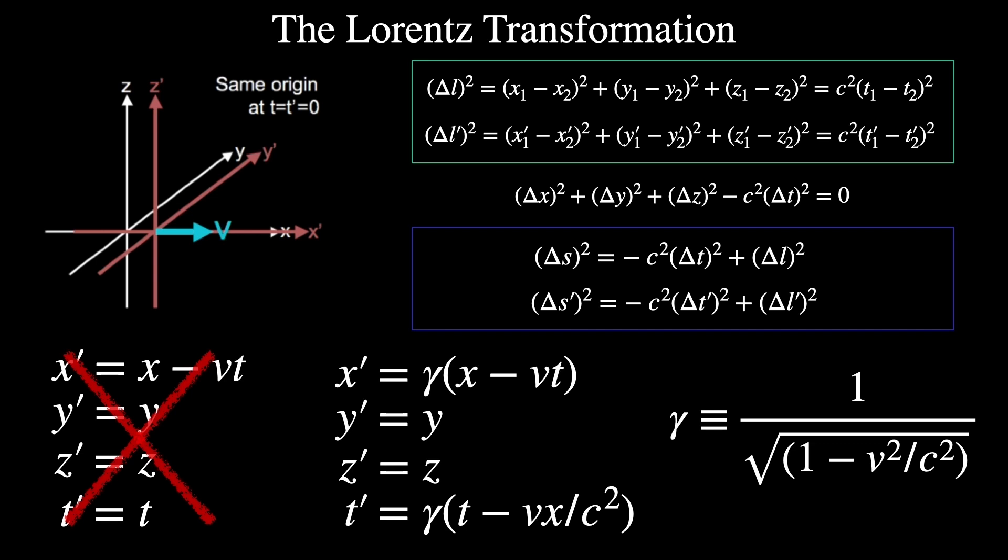But if you look at events where you're transforming between two frames at a speed that's an appreciable fraction of the speed of light, then you need the middle set of equations. These are the Lorentz transformations.